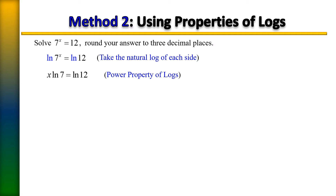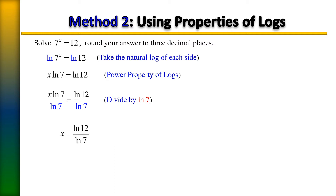Notice x is being multiplied on the left side with the natural log of 7. Since it's being multiplied with x, we do the opposite operation and divide by the natural log of 7. Whatever you do to one side you do to the other, and you'll get the same answer as before — the natural log of 12 divided by the natural log of 7 gives a decimal approximation of 1.277.